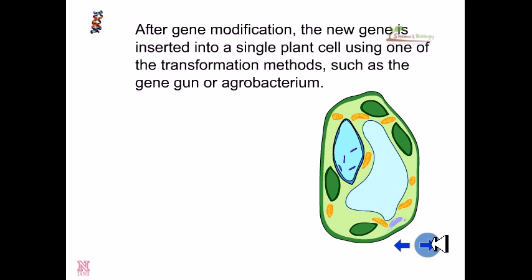After gene modification, the new gene is inserted into a single plant cell using one of the transformation methods, such as a gene gun or via the vector Agrobacterium tumefaciens.